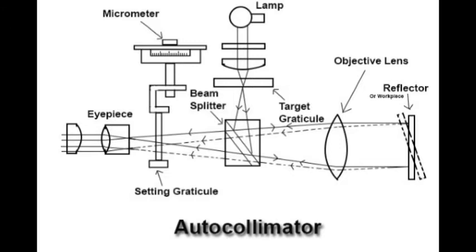Next is the beam splitter, which is used to split the light rays and direct them towards the objective lens. Next is the target graticule — the light rays after getting reflected reach this target graticule, and the distance between the incident and reflected ray is traced in this target graticule. Next is the micrometer microscope, which is used to see the points of the incident and reflected ray in the target graticule clearly and to measure the distance between them.